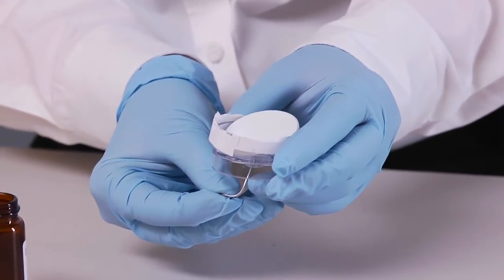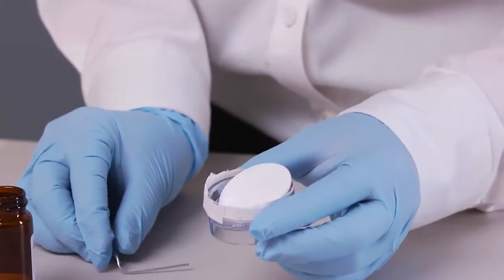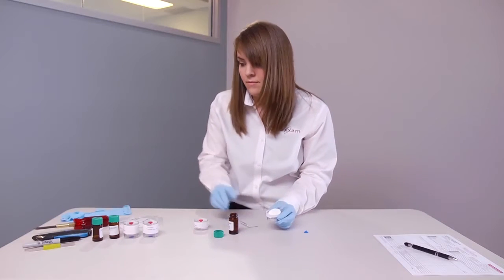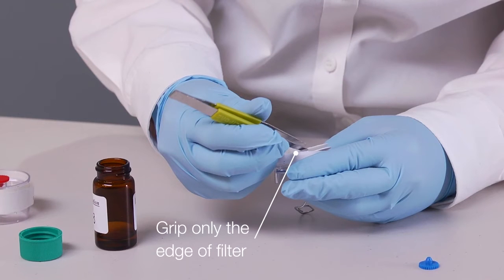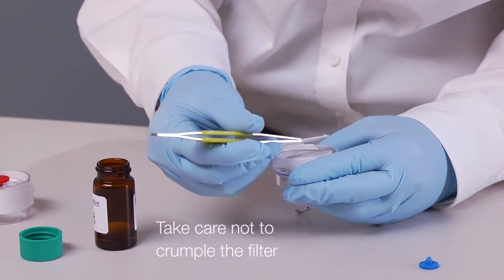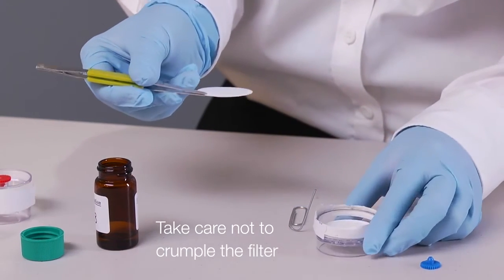When the edge of the support pad is above the cassette rim, use the tweezers to peel the filter from the pad. Grip only the edge of the filter to avoid disturbing the sample surface. Also, take care not to crumple the filter.